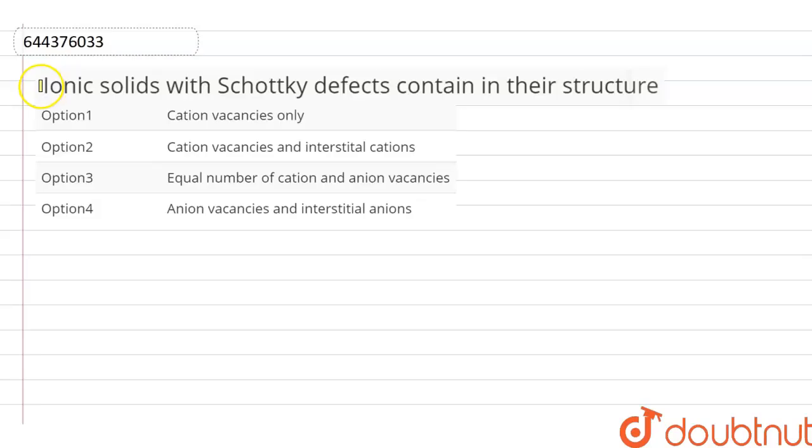Here is a question: Ionic solids with Schottky defects contain in their structure. Option first, cation vacancies only. Option second, cation vacancies and interstitial cations. Option third, equal number of cation and anion vacancies. Option fourth, anion vacancies and interstitial anions.